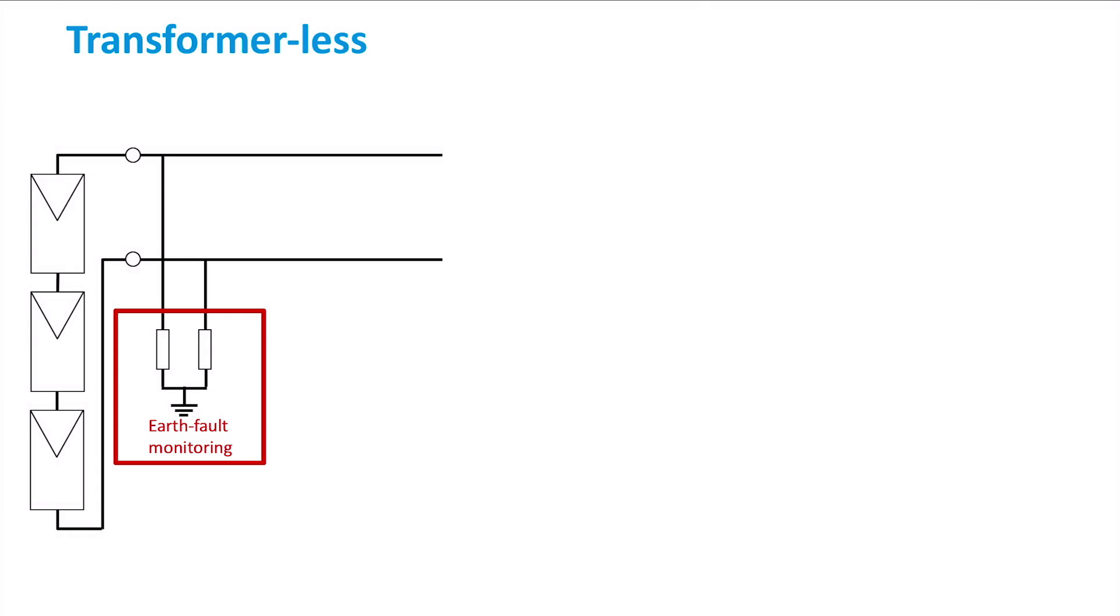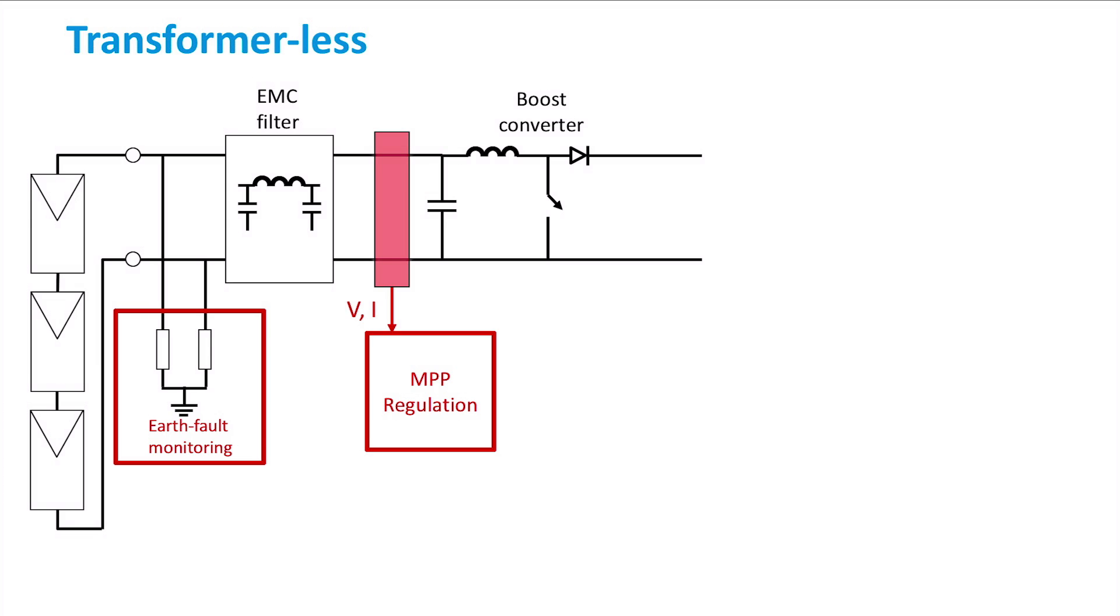An EMC filter is connected at the input of the inverter. EMC stands for electromagnetic compatibility, and it represents the ability of the electrical device to operate without being affected or causing electromagnetic interference. After the filter, current and voltage are measured and the data is sent to the maximum power point regulator. In order to keep the PV array at the maximum power point, a boost converter is provided.